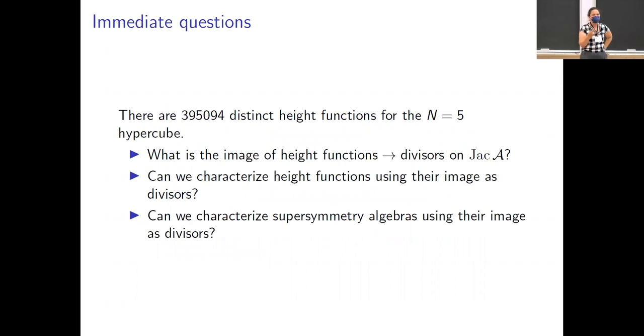Yeah, 395,000. So first of all, you ask, okay, well, we map height functions to divisors. What kind of image can we have? What kind of points can we get on this Jacobian? And then you hope that maybe you can do more. Maybe you can classify height functions in some sense using information that you gather by simplifying down to the divisor map, which we know simplifies a lot because in the lower dimensions, it just basically throws everything away and identifies all of the height functions. And then you could hope that maybe you could even then start pulling that information back and see what it did on the algebra level instead of the graph theory level.